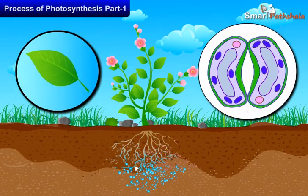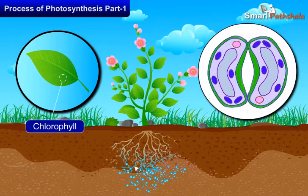The leaves have a green pigment called chlorophyll. It helps leaves to capture the energy of the sunlight. This energy is used to synthesize food from carbon dioxide and water.